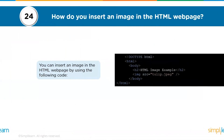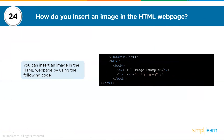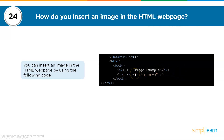The twenty-fourth question: how do you insert an image in an HTML web page? You can insert an image using the img tag with the src attribute. For example, as shown on the right-hand part of the screen: img src equals tulip.jpeg, which is used for inserting an image into your HTML web page.